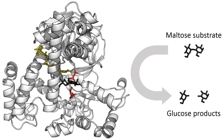Enzymes are not rigid, static structures; instead they have complex internal dynamic motions — movements of parts of the enzyme's structure such as individual amino acid residues, groups of residues forming a protein loop or unit of secondary structure, or even an entire protein domain. These motions give rise to a conformational ensemble of slightly different structures that interconvert with one another at equilibrium. Different states within this ensemble may be associated with different aspects of an enzyme's function. For example, different conformations of the enzyme dihydrofolate reductase are associated with substrate binding, catalysis, cofactor release, and product release steps of the catalytic cycle.